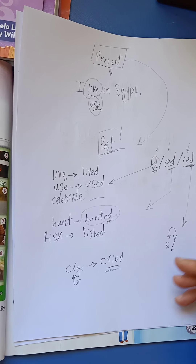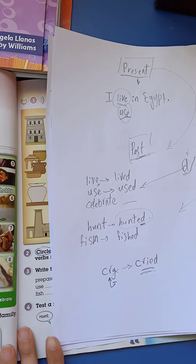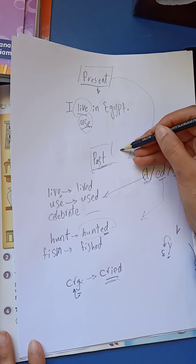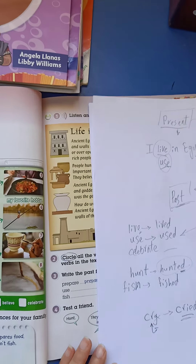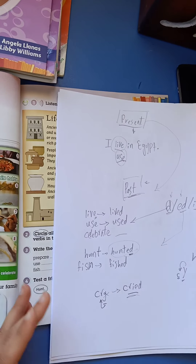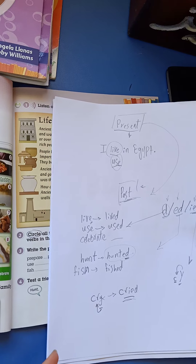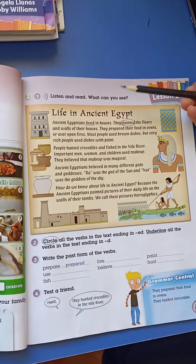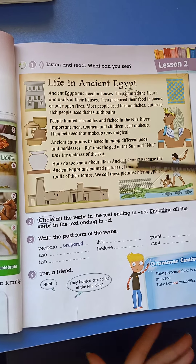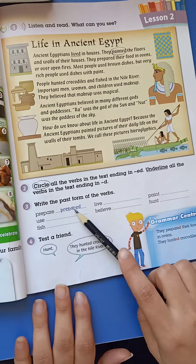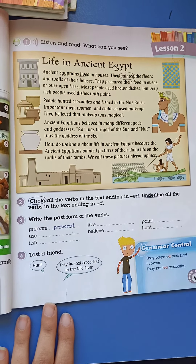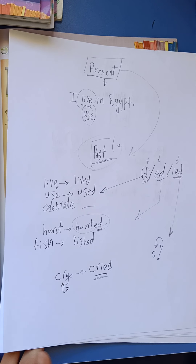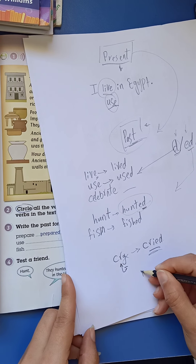We need to make a paragraph about these verbs in the past — about ancient Egyptians. It will be a task; I will talk about it later. Let's move to lesson two. Lesson two is about reading and also about regular verbs. We add D, ED, or IED to transfer them to the past.